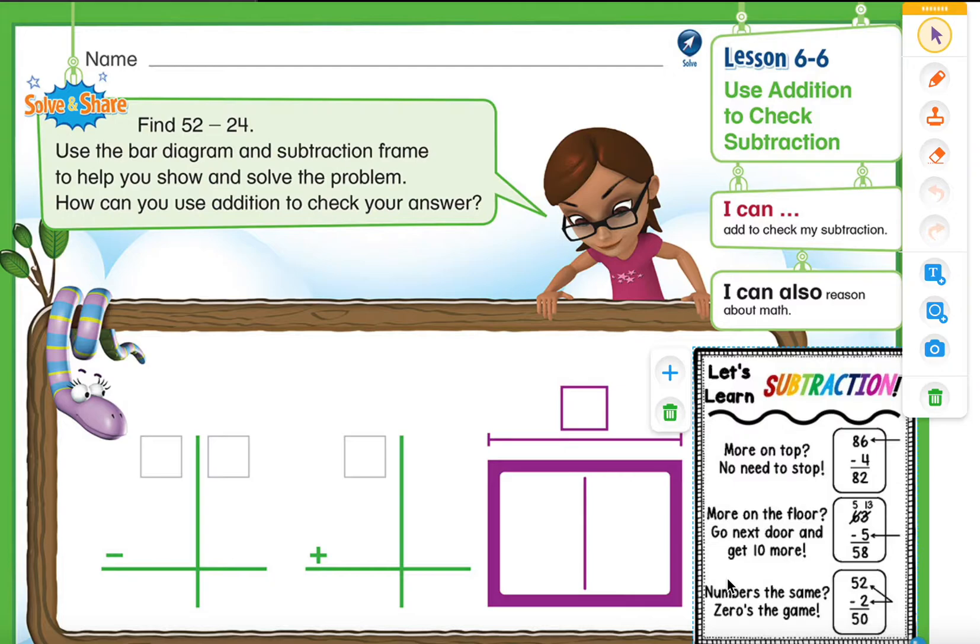So let's take a look at our problem here. Find 52 minus 24. Use the bar diagram and subtraction frame to help you show and solve the problem. How can you use addition to check your answer?